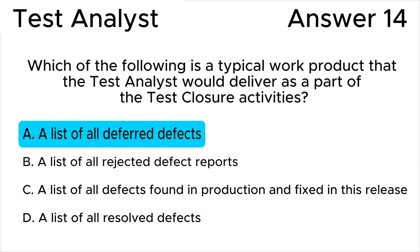Answer C is wrong because a list of all defects found in production and fixed in this release is more related to the defect resolution process and the tracking of defects post-production. It is not a typical work product delivered during test closure, which is more focused on summarizing the testing activities.